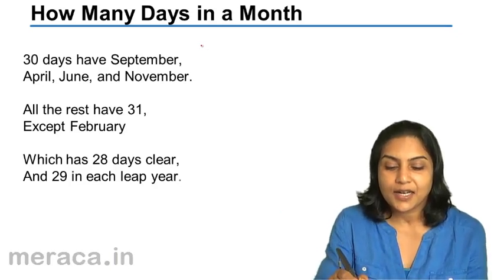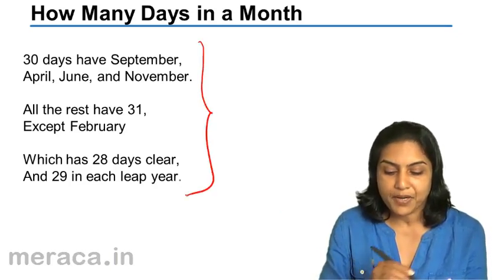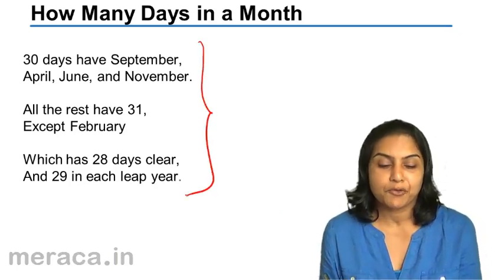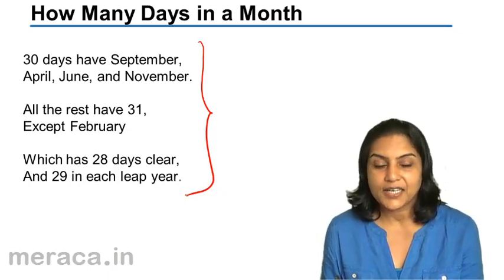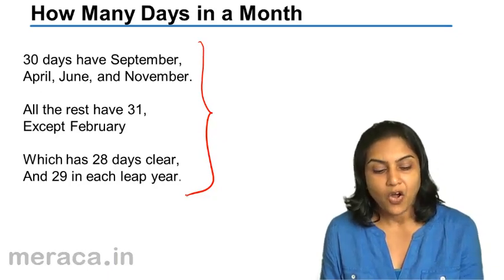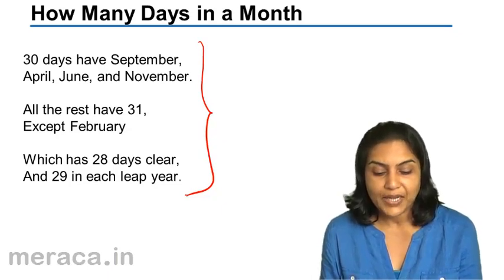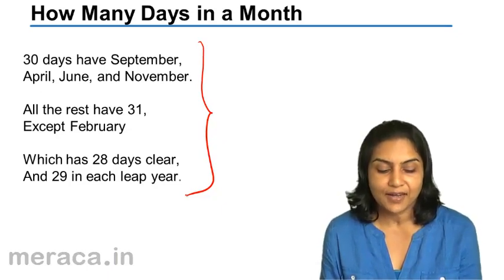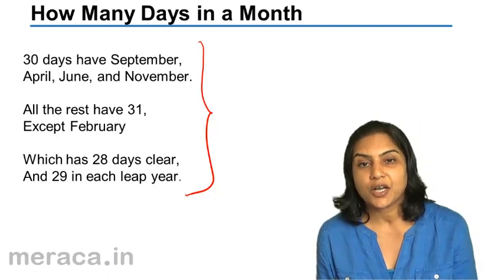30 days have September, April, June and November. All the rest have 31, except February which has 28 days clear and 29 in each leap year.